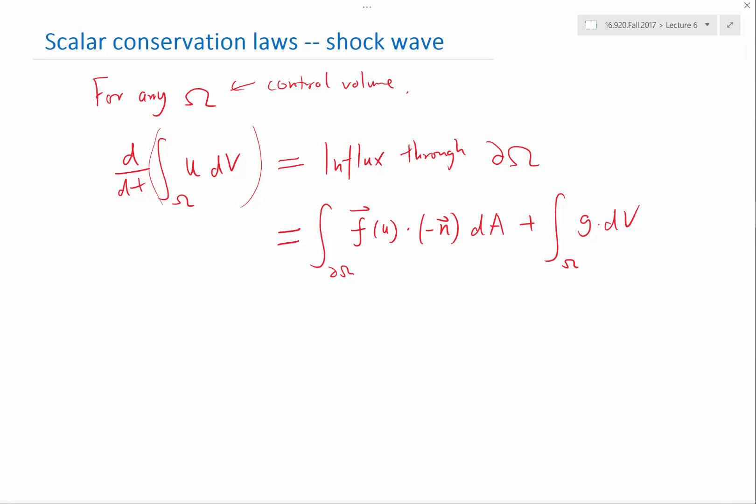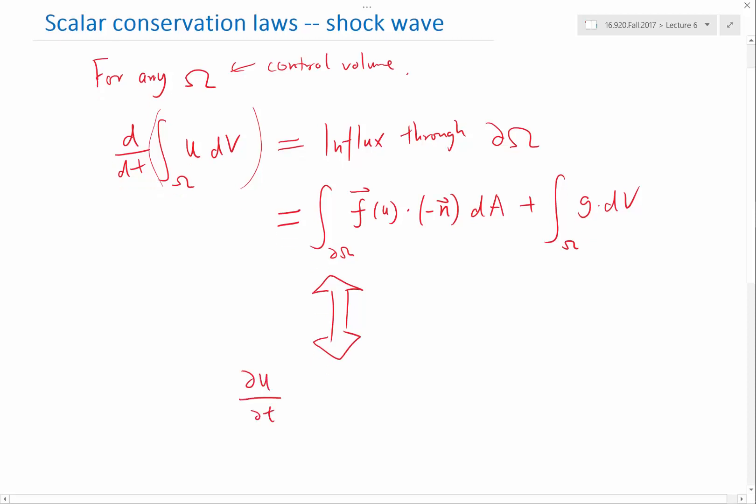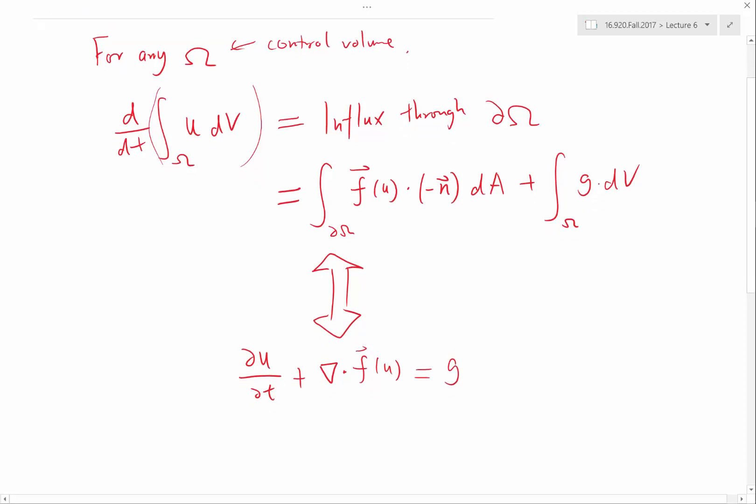So why is this equivalent to the conservation law we had before? Why is this the same as du/dt plus dF? Let me just write it in the more general form, the divergence of f equal to g. So why is it the same as the conservation law we wrote before? You have a question or you have an answer? How do you go back and forth between that?